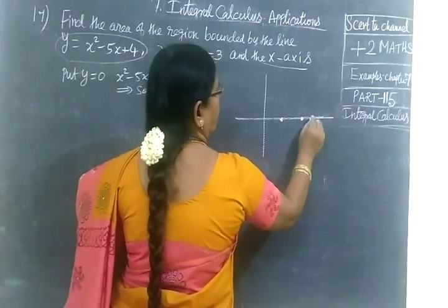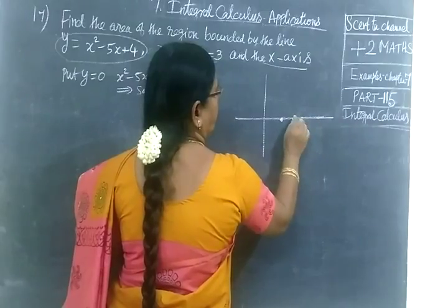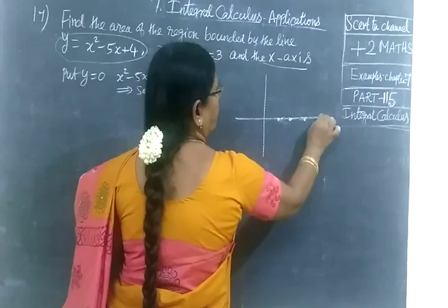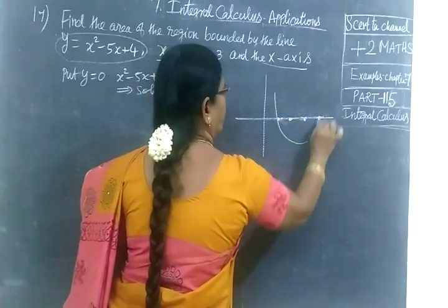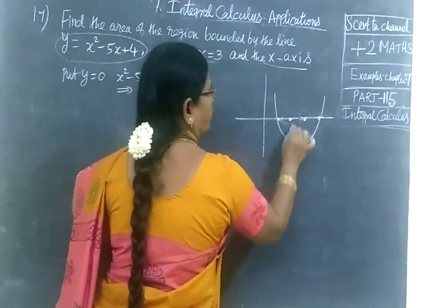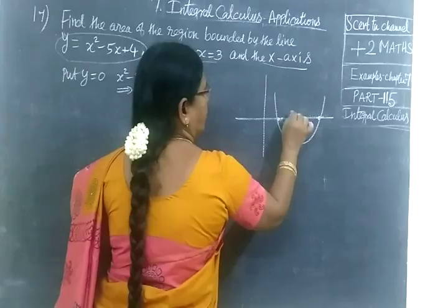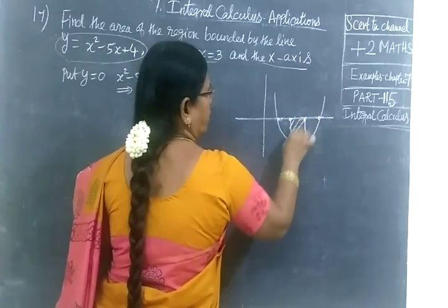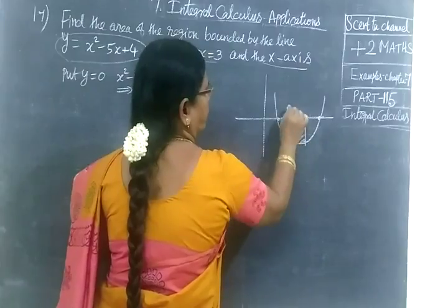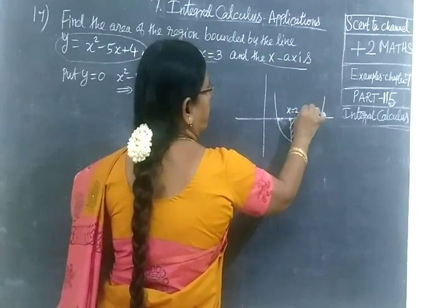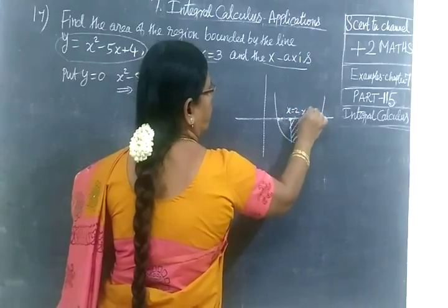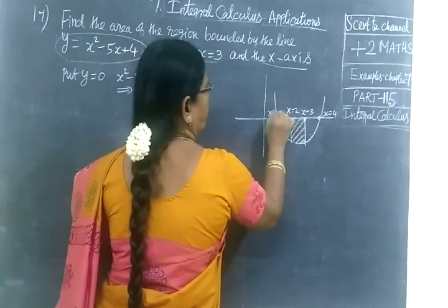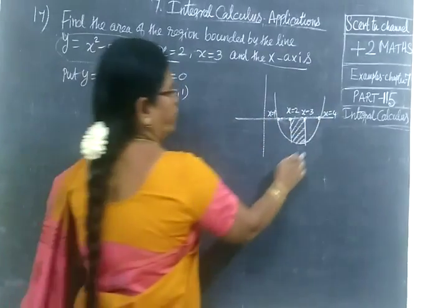So the x-values are 1, 2, 3, 4. In the interval 1 to 4, the parabola is in that form. That means x equal to 2 and x equal to 3 are our limits.